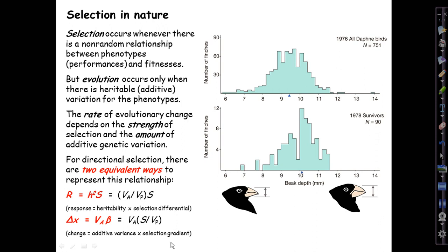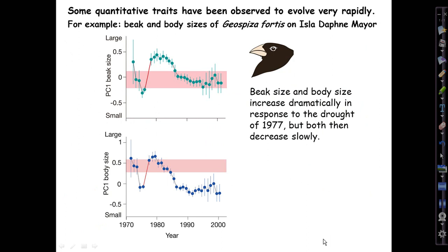The equivalence won't be obvious yet, but it will make more sense when we see what the selection gradients actually look like. We'll develop this idea with Darwin's finches and their beak depths — a classic example of very rapid ecological-time evolution of a quantitative trait. The beak and body sizes of Darwin's medium ground finches on Isla Daphne Mayor in the Galápagos shot up in 1977 in response to a terrible drought brought on by a major El Niño event in the Pacific.